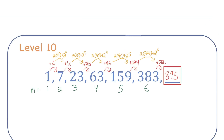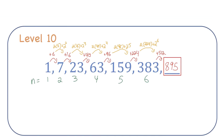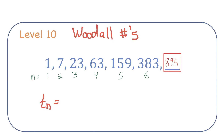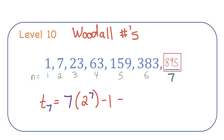I don't really like that method. These numbers are actually called Woodall numbers. The formula for generating a Woodall number is: take the term number, multiply it by 2 to the power of n, then subtract 1. Since we were trying to find the seventh number, subbing 7 into the formula for n gives 895. That formula will find the value of any term number you want in that sequence.